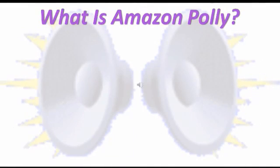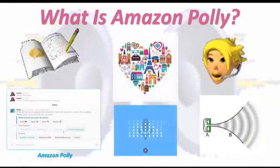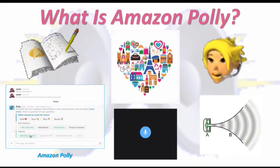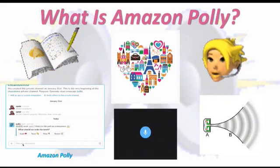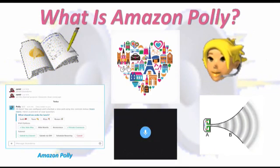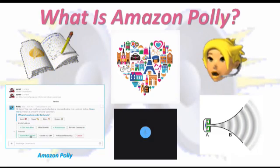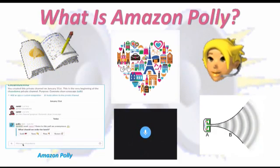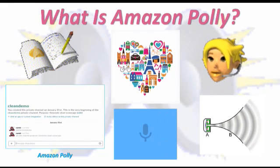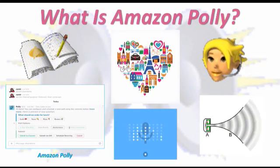What is Amazon Polly? Listen to the answer voiced over by the Amazon Polly engine itself. Amazon Polly is a service that turns text into lifelike speech. Amazon Polly lets you create applications that talk, enabling you to build entirely new categories of speech-enabled products. Amazon Polly is an Amazon AI service that uses advanced deep learning technologies to synthesize speech that sounds like a human voice. Amazon Polly includes 47 lifelike voices spread across 24 languages, so you can select the ideal voice and build speech-enabled applications that work in many different countries.